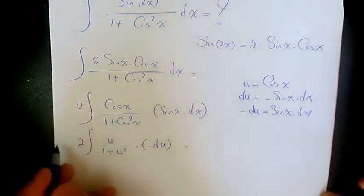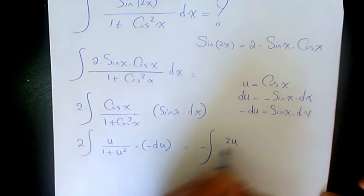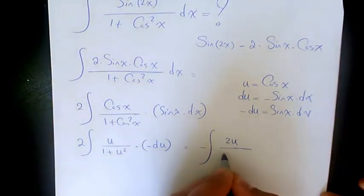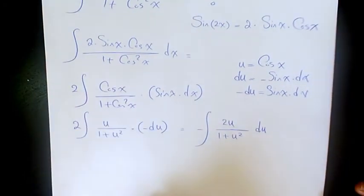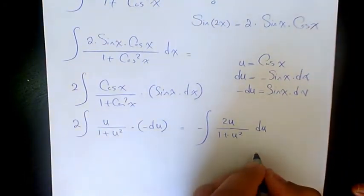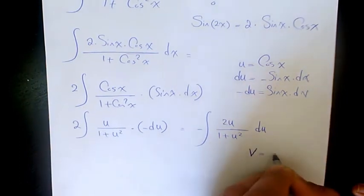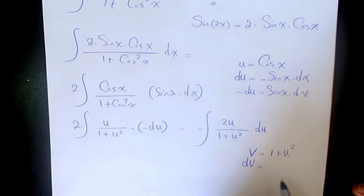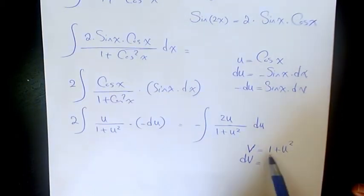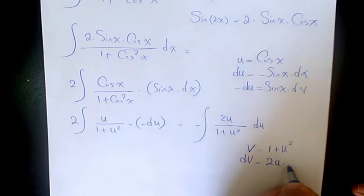So, we put the negative there, 2u, it's better to take the 2 out. Then, what I can do, I can do another substitution method. I'm going to have v equals 1 plus u squared, and the derivative of v is going to be the derivative of 1 plus u squared. The derivative of 1 is 0, the derivative of u squared is going to be 2u du.